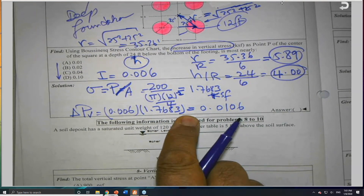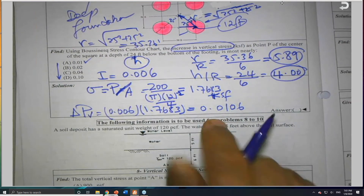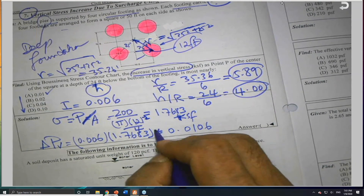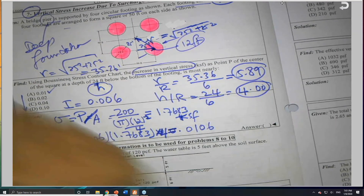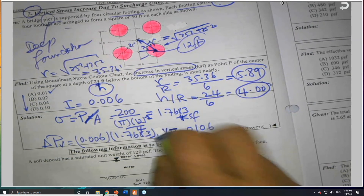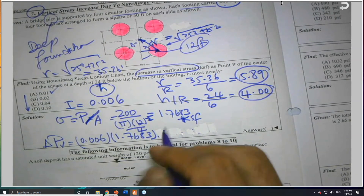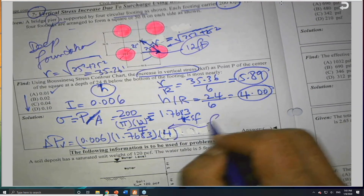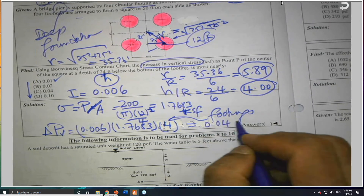If I ignored the four footings I would get answer A. But this is due to one footing only — one circular footing. So I have to multiply by four. Four times 0.01 equals approximately 0.04 ksf. The correct answer is C, which is 0.04 ksf.